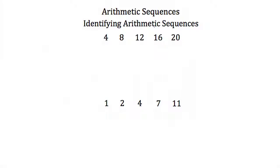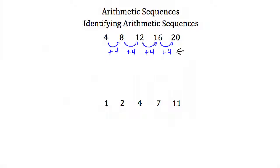Looking at our first sequence: 4, 8, 12, 16, and 20. To go from 4 to our second term, 8, we add 4. From 8 to 12, we add 4. From 12 to 16, we add 4, and from 16 to 20, we add 4. Because we're adding 4 each time we go to the next term, this is an arithmetic sequence.